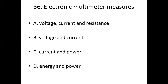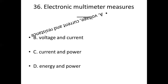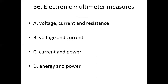36th bit. Electronic multimeter measures dash. Option A: voltage, current and resistance. Option B: voltage and current. Option C: current and power. Option D: energy and power. Answer: Option A, voltage, current and resistance.